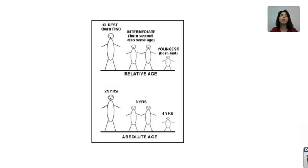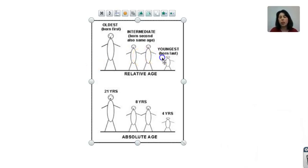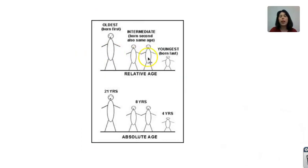I love this diagram right here because it compares the two. If you look at the picture on top, we can see relative age illustrated with a family of children. We're comparing those children to their siblings — we have the oldest, the intermediate, and the youngest. We're not giving any numbers; we're saying these children are older than the younger child. Likewise, at the bottom, we have absolute age, which gives us values of 21 years, eight years, and four years.